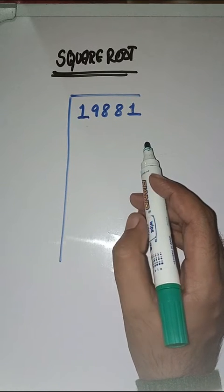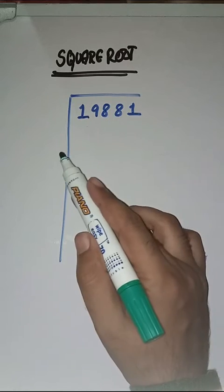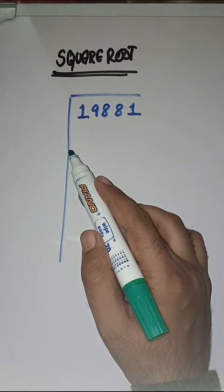So, what we will do? First step is we have to make pairs from right to left. Like this.